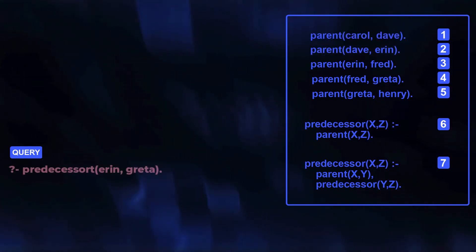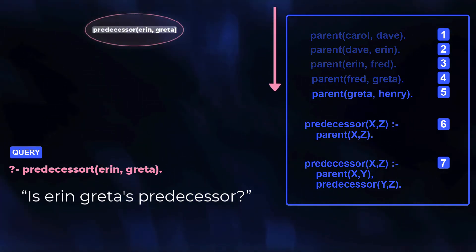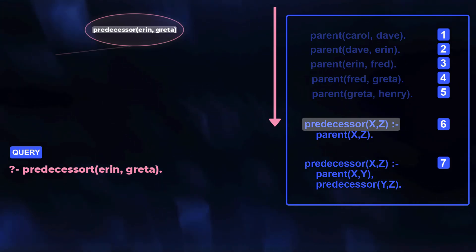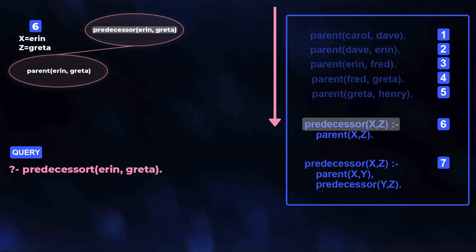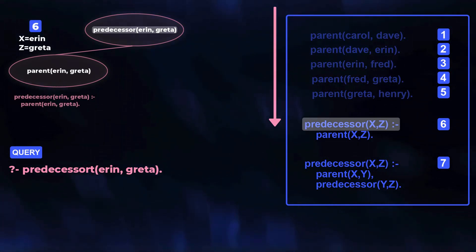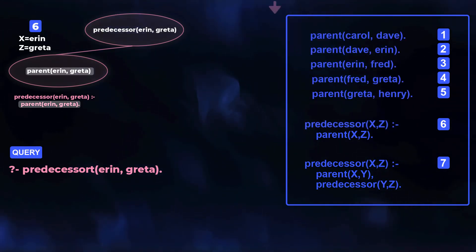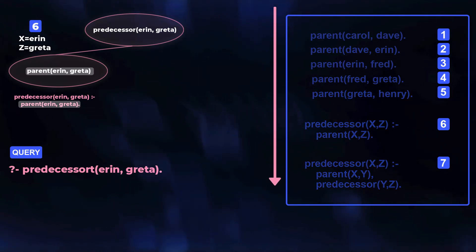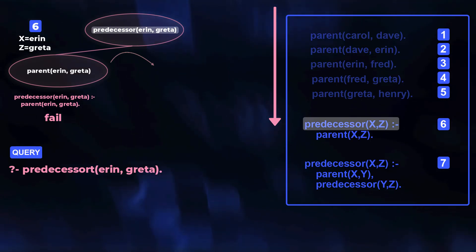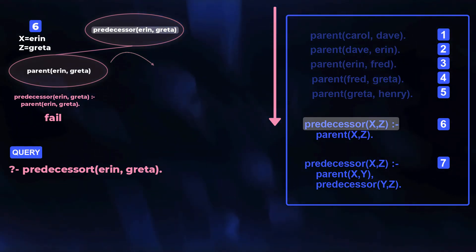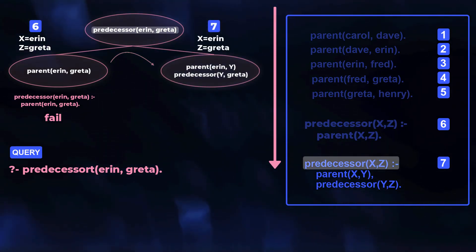Let's also try a query that uses a rule. For rules, matching is carried out on the head, and clause 6 is the first success. We get variable bindings for X and Z, and with those bindings the rule instantiates. We have a new goal to prove. Prolog tries but finds no matches, so it revisits the choice of clause 6 — another backtrack. Matching succeeds next on the head of clause 7, with variable bindings that instantiate the rule.